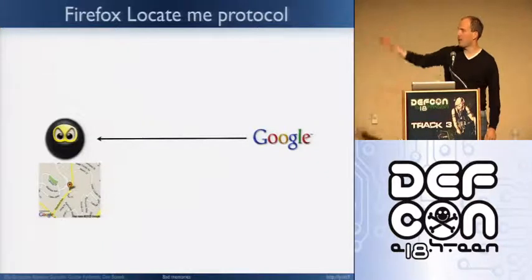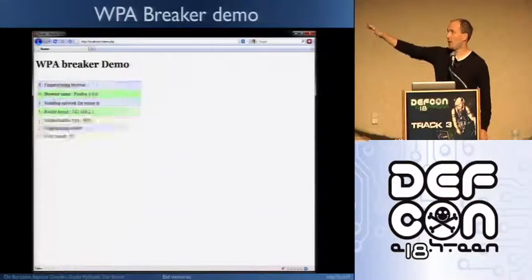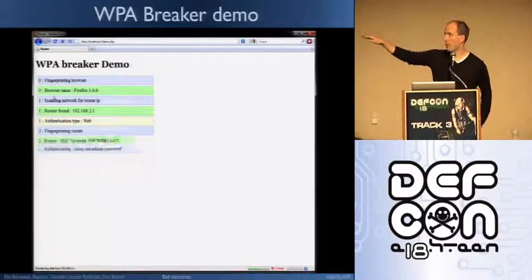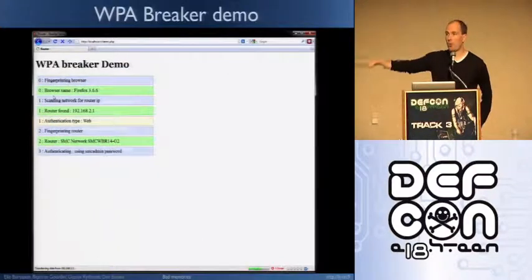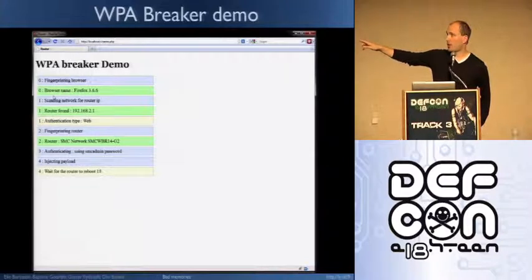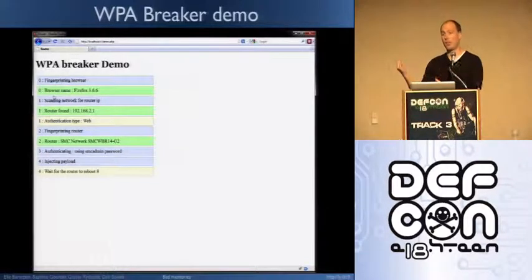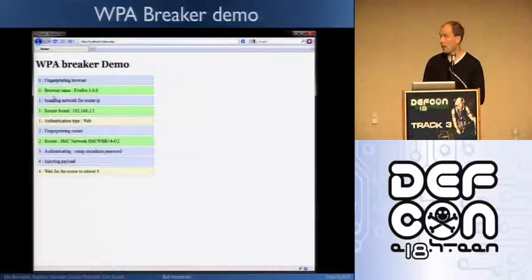So this is a demo of our code, fully written in JavaScript. In step one, we are doing a fingerprinting of the browser to know which kind of exploit we can use. Then we're going to port scan, find what kind of authentication we are using — it's a bug in Firefox. Then fingerprinting the routers, injecting an XSS in this case.